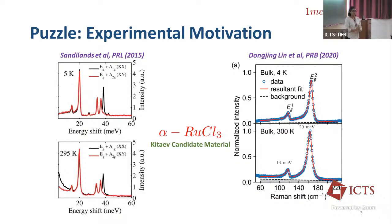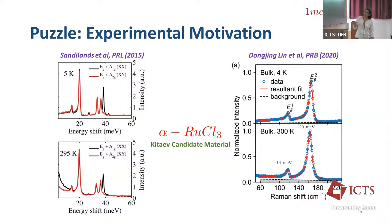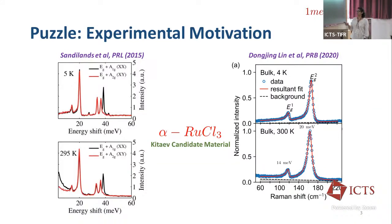Let me present the question we are trying to address. As I'm sure you have heard, alpha ruthenium chloride is a proposed Kitaev candidate material. Here I am showing you the Raman spectra on this material. This experiment was done in 2015, and later in 2020 a similar experiment was done with better samples. I want you to focus on the two lowest energy peaks — the EG1 and EG2 peaks — which show some kind of asymmetry, called the Fano asymmetry.